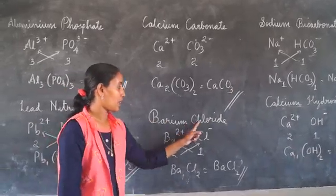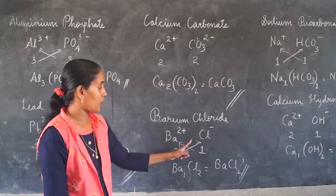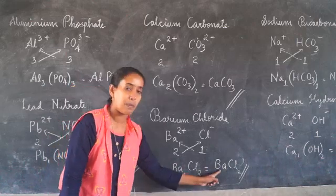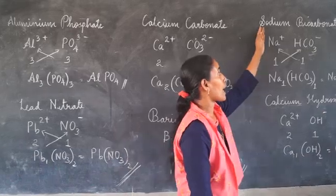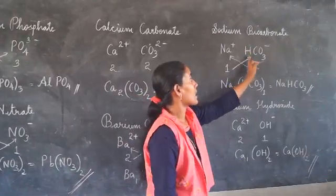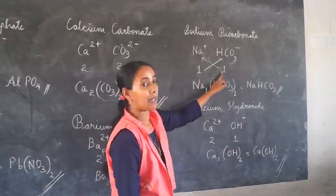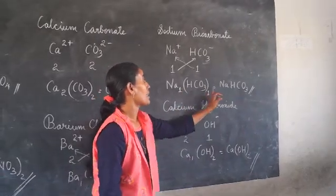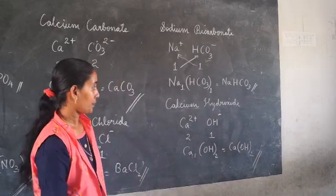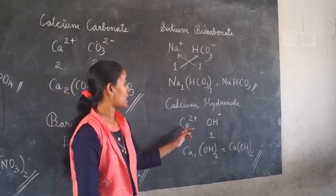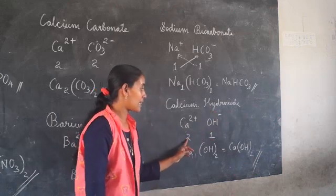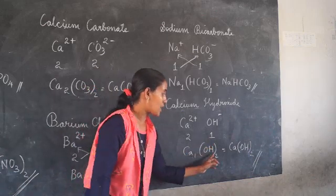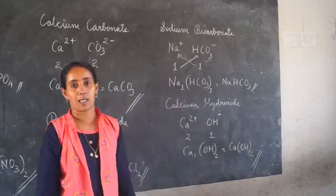Next: barium chloride. Barium is Ba2 plus and chloride is Cl minus. The valency of barium is 2 and the valency of chlorine is 1. Interchanging the valencies gives Ba1 Cl2. The formula is BaCl2. Next: sodium bicarbonate. Na plus and bicarbonate is HCO3 minus. The valency of sodium is 1 and the valency of bicarbonate is 1. The formula is NaHCO3. Next: calcium hydroxide. Calcium is Ca2 plus and hydroxide is OH minus. Calcium valency is 2 and hydroxide valency is 1. Interchanging gives Ca1 OH2, so the formula is Ca(OH)2.